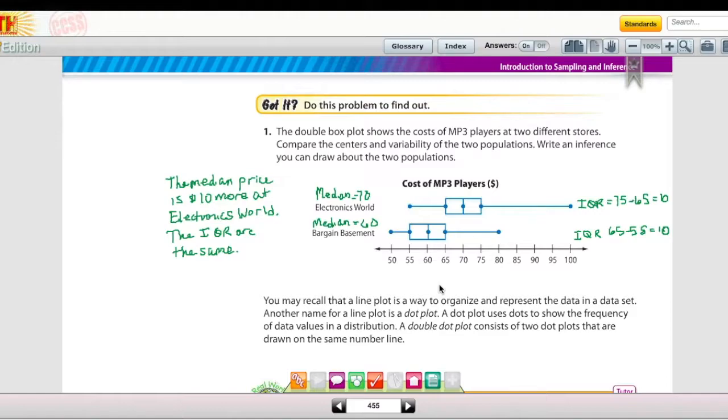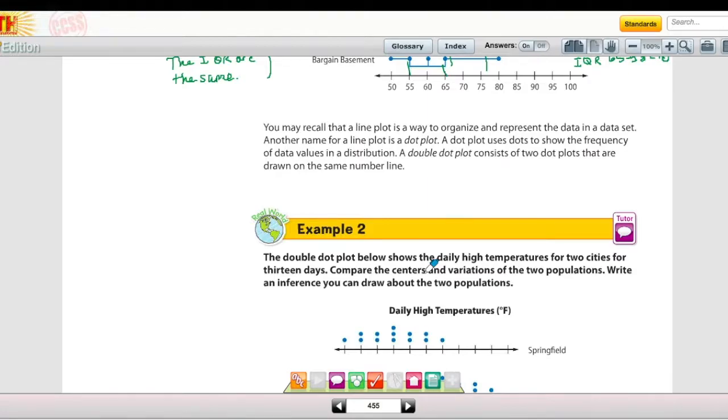On the top of page 455, example two, you have the cost of MP3 players posted as a double boxplot. Notice that I've already filled in the median for Electronics World and Bargain Basement. One statement that you can write is the median price is 10 more dollars at Electronics World. I also found the interquartile range, taking 75 minus 65 to get 10, and taking 65 minus 55 to get 10. So another statement I made is that the interquartile ranges are the same.